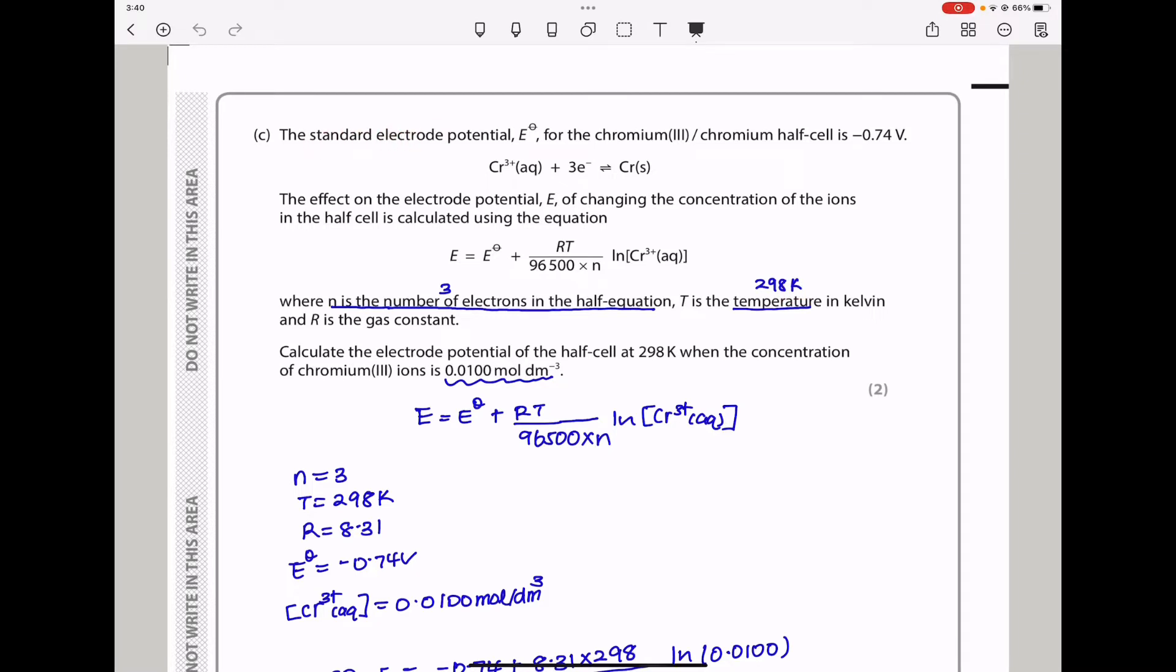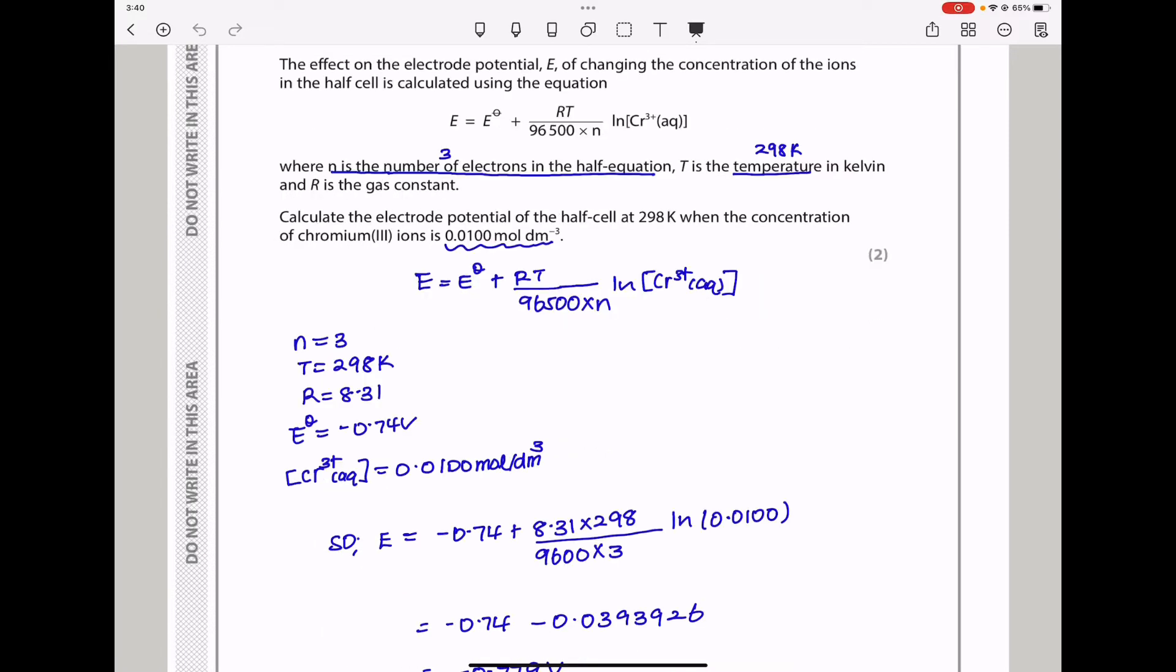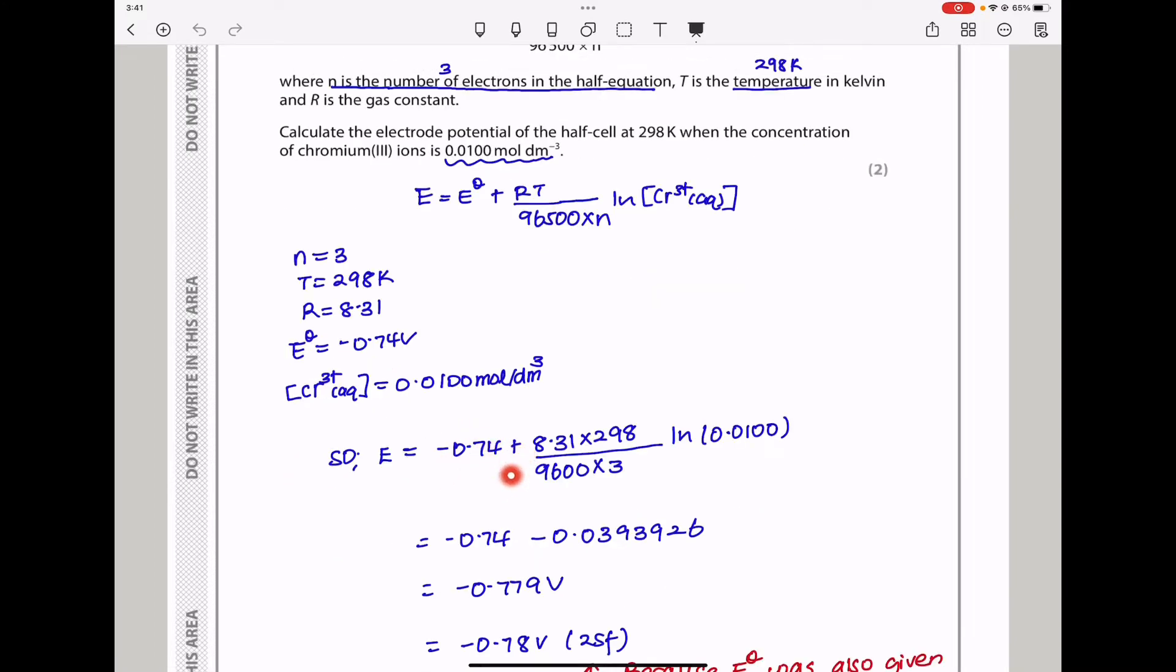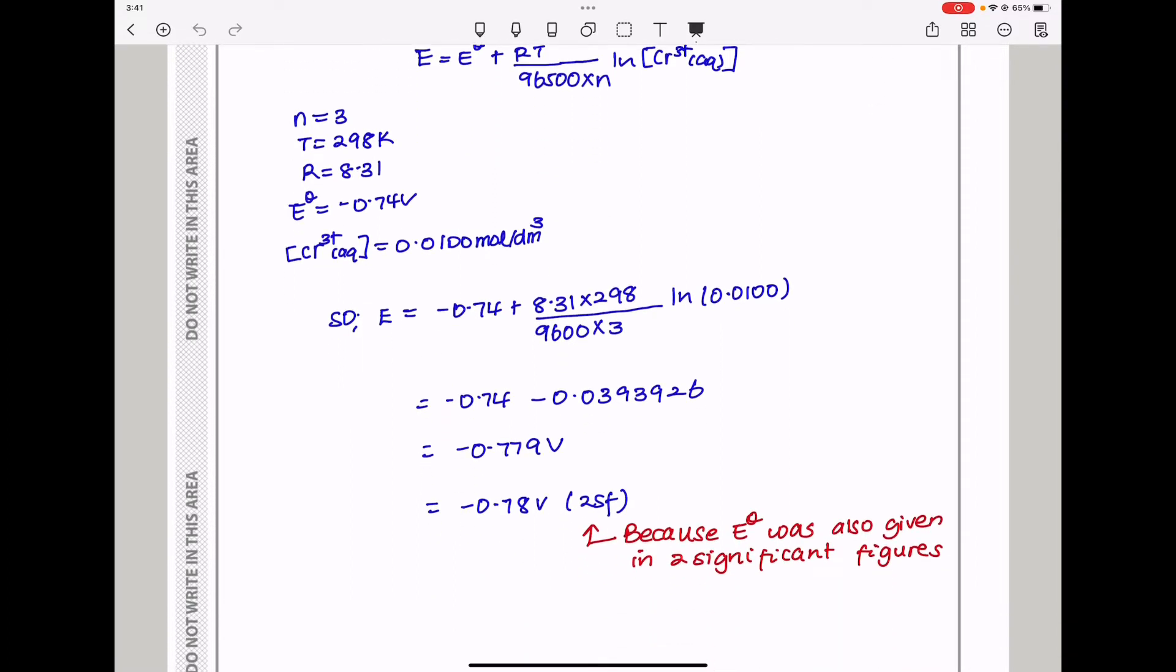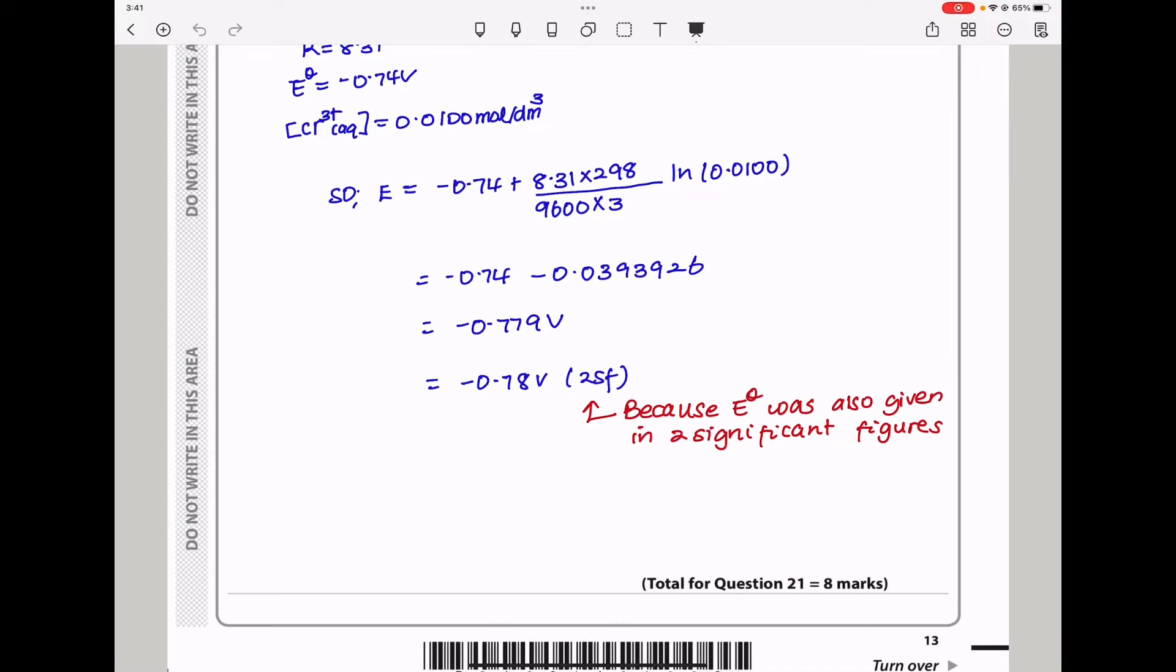Calculate the electrode potential at 298 Kelvin when chromium-3 ion concentration is 0.0100 mol/dm³. Using this formula, n equals 3, t is 298, r is 8.31 (the gas constant), E° is -0.74, and chromium concentration is 0.01. Substituting everything: -0.74 + (8.31 × 298)/(96000 × 3) × ln(0.0100). When simplified, I got -0.78 volts due to significant figures. This brings us to the end of Question 21.